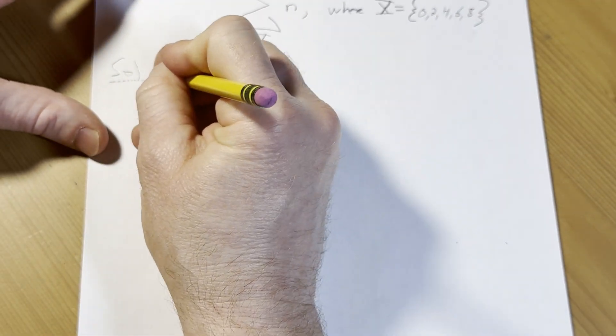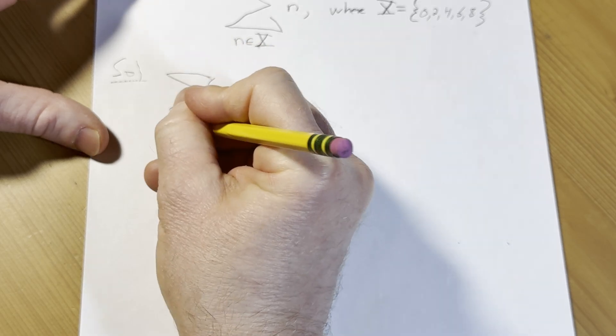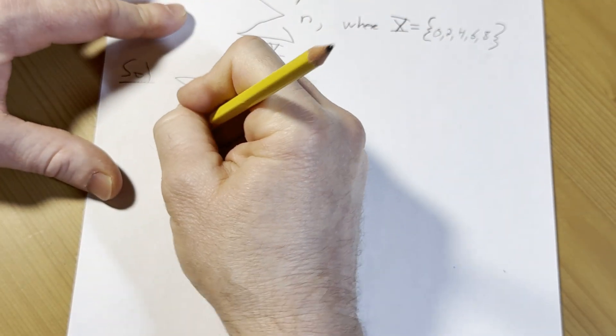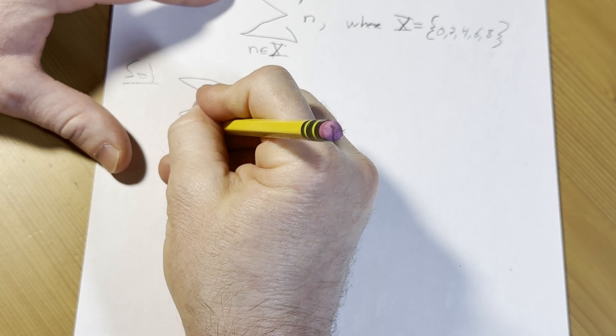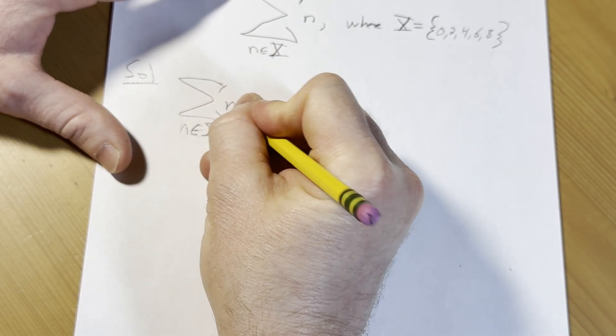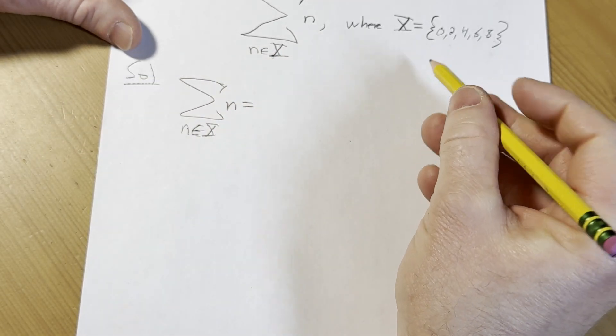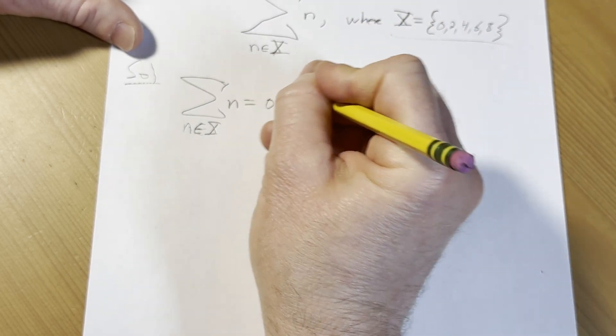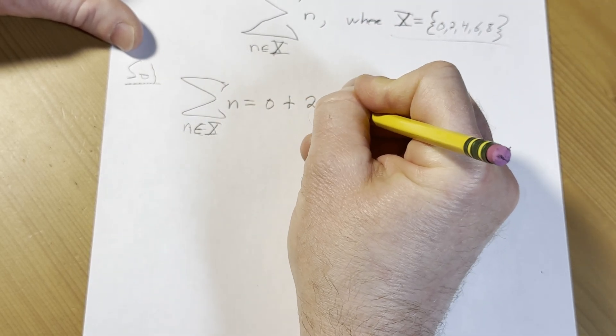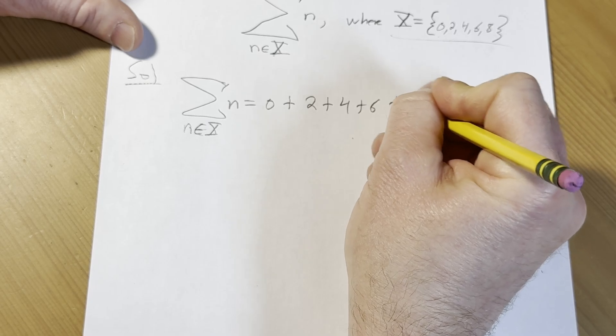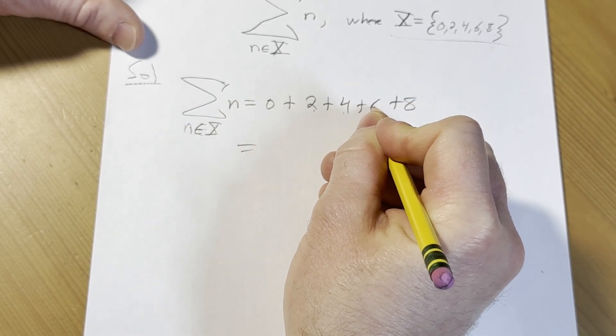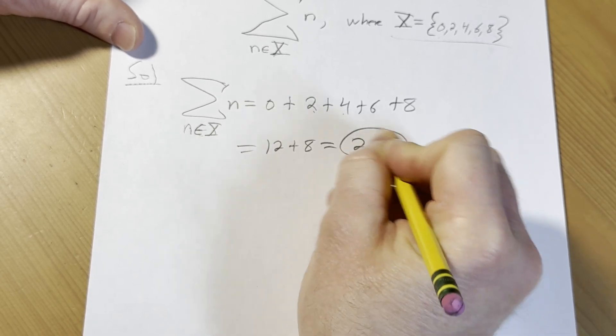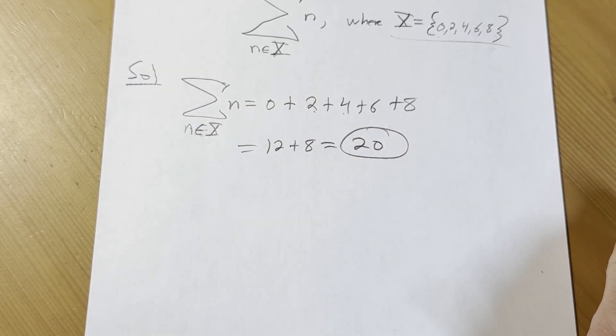So how do you do it? Let me show you, just introduce you to some new notation. There's all kinds of weird notation in math. So first you plug in 0. It's just the sum of all the members of this set n. So it's 0 plus 2 plus 4 plus 6 plus 8. 2 plus 4 is 6, 6 plus 6 is 12. So you get 12 plus 8, which is 20. And that would be the answer there.